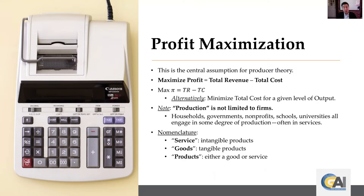Production isn't limited to firms. Households, government, nonprofits, schools, and universities are all engaging in some degree of production, often in services. Services are intangible products — when you go get advice or a consultation, that's a product but it's intangible. Whereas something tangible we call goods, and more generally we call either service or good 'products.' So products is the most generic term you can use.